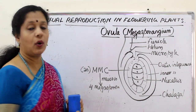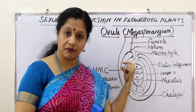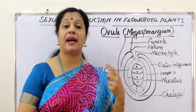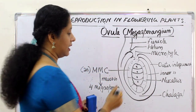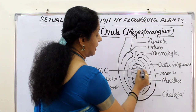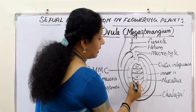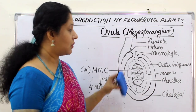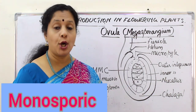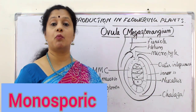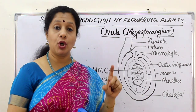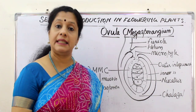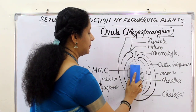Just as we got a pollen tetrad, here we get four megaspores — but again we do not want all four. We want only one. The top three will degenerate and only the one toward the chalazal end will remain. This kind of development is called monosporic development or polygonum type of development. Mono means only one megaspore will be functional; the rest all degenerate.